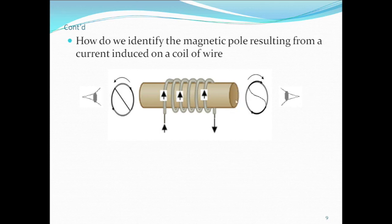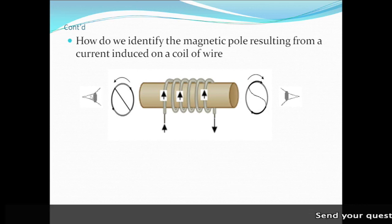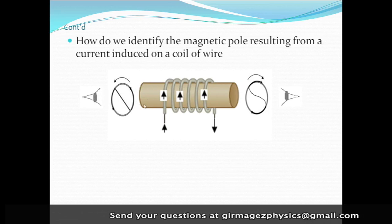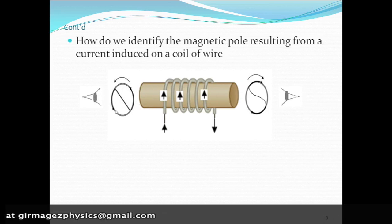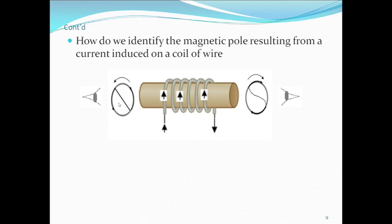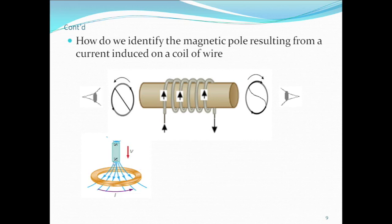To identify the magnetic pole resulting from a current induced in a coil of wire: when the current flows clockwise in the coil, it behaves as a south pole. When the current flows anti-clockwise, that face of the coil becomes a north pole.